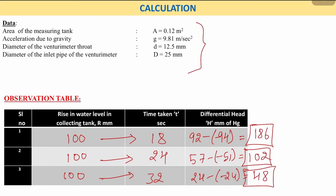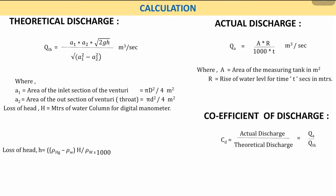The data to be taken includes the area of the measuring tank, and d is the venturi throat diameter while capital D is the inlet pipe diameter. The formula for theoretical discharge uses a1 and a2 as inlet and throat areas respectively. Head loss h is calculated from the manometer readings. Actual discharge uses the formula: Q_actual = A × R / (1000 × t), where A is tank area, R is the 100 mm rise, and t is the time in seconds. The coefficient of discharge Cd = Q_actual / Q_theoretical.